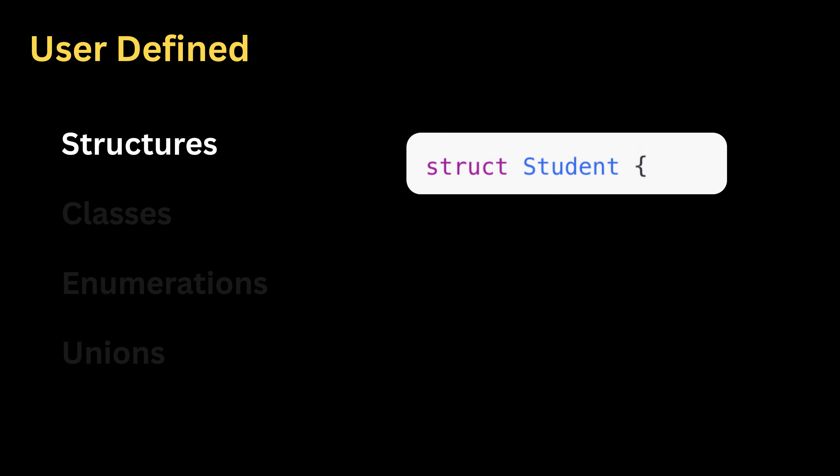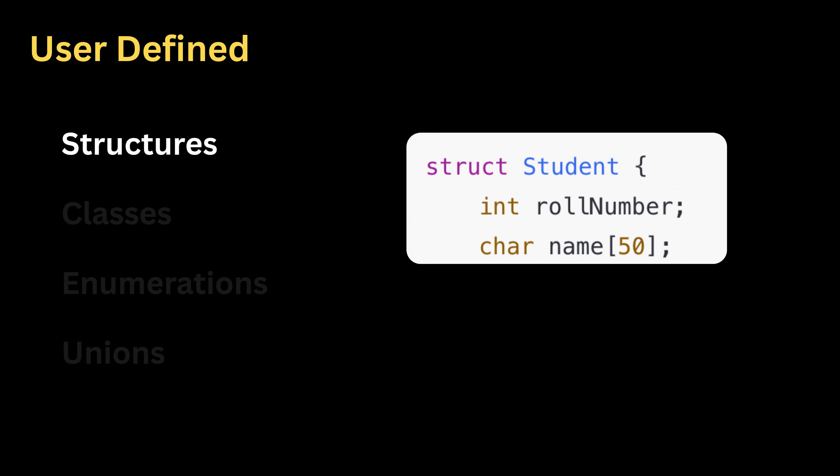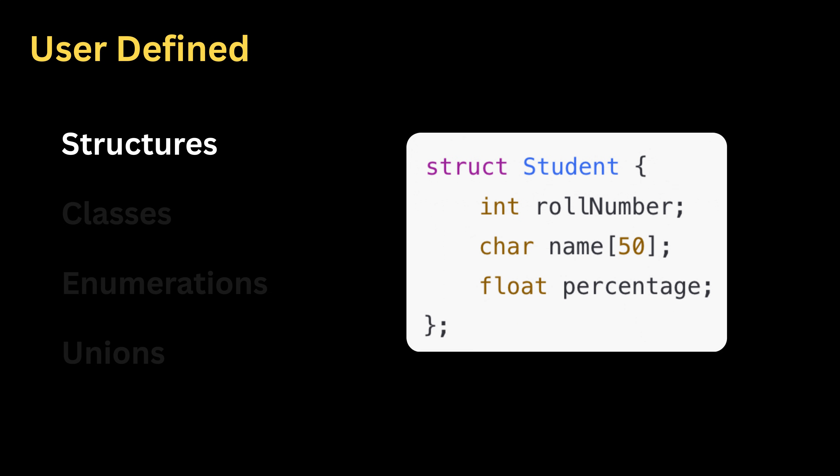A structure lets us combine multiple pieces of information, even if they are of different data types, into one single unit. For example, imagine we create a structure called student. Inside it, we keep an integer field called role number, a string field for the name, and a real number field for percentage. All these fields stay grouped together as one combined type called student structure.